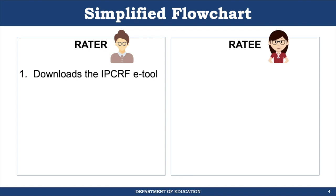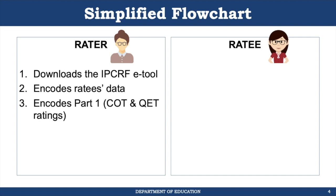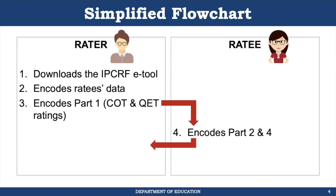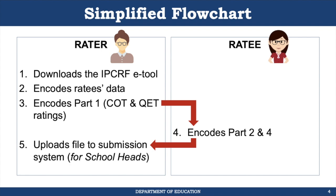First, the rater downloads the IPCRF electronic tool and encodes the rater's and ratee's data, then encodes the COT and QET ratings. At this point, the rater hands the electronic tool to the ratee, who encodes Parts 2 and 4, then gives the file back to the rater or to the school head for submission online.